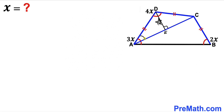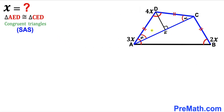Since triangle ACD is isosceles, angle DAE equals angle DCE, so if each is alpha, then right triangles AED and CED are congruent by the side-angle-side congruency theorem. Therefore side length AE equals side length EC — if one is lowercase a, so is the other.